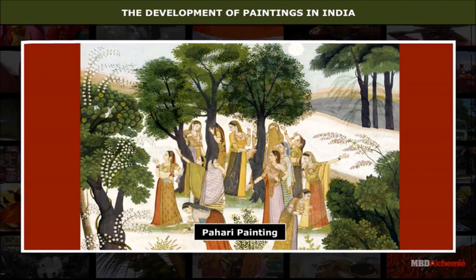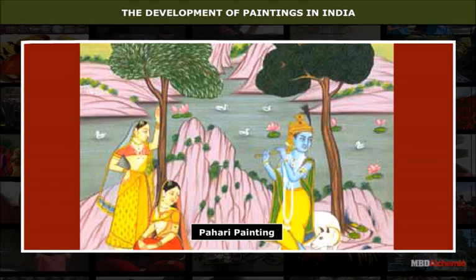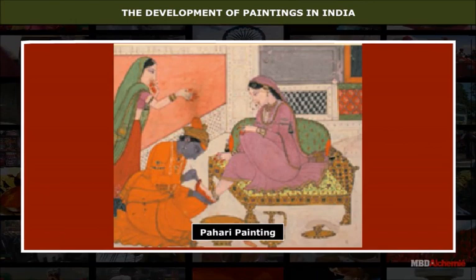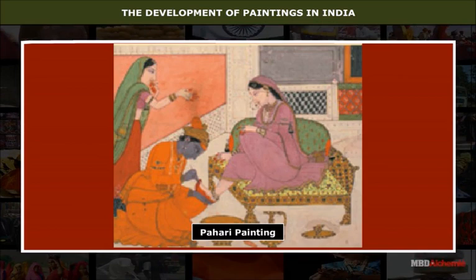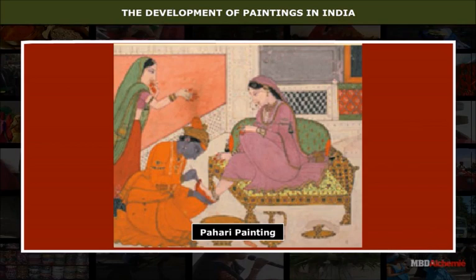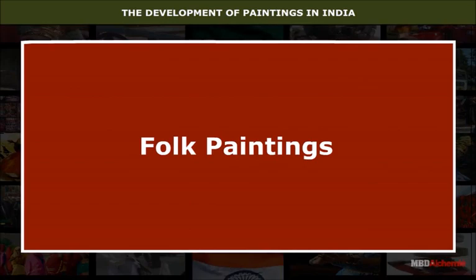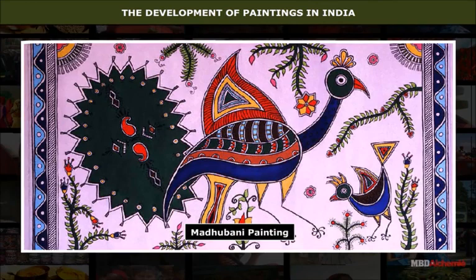Pahari paintings came from small Hindu kingdoms in the Punjab hills. Most of these tiny kingdoms, ruled by Rajput families of Basali, Chamba, Guler, Jammu, Noorpur, Kullu, Garhwal, Kangra, etc., were surrounded by snow-clad mountains. Inspired by love, the main theme of these paintings is the boyhood pranks of Krishna, his cowherd companions, and his amorous frolics with Radha, which symbolize the devotion of man for divinity.